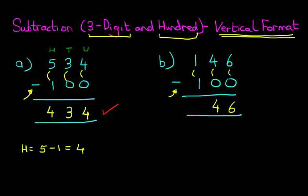146 minus 100 is 46. The only digit which changed was the hundred. And it really is that simple. And so that is subtraction of a three-digit number and the number 100 using the vertical format.